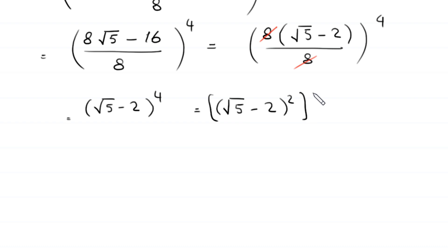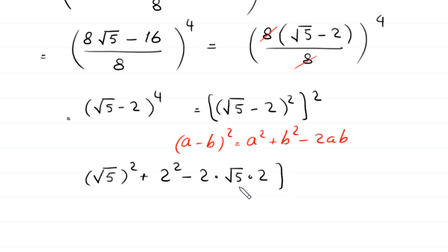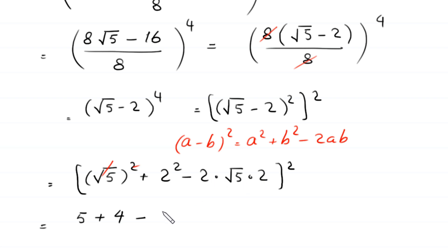This can be written as square root of 5 minus 2, whole squared, and whole to the power 2. Using the algebraic identity (a-b)² = a² + b² - 2ab, square root of 5 minus 2 whole squared becomes square root of 5 squared plus 2 squared minus 2 times square root of 5 times 2, whole to the power 2. The square cancels with the square root, leaving 5 plus 4 minus 4 times square root of 5, whole to the power 2.